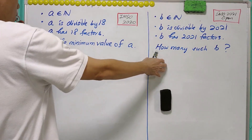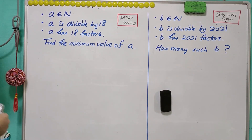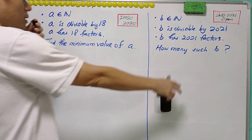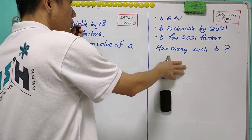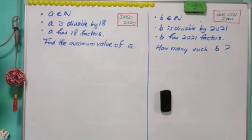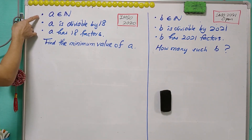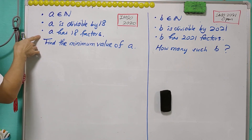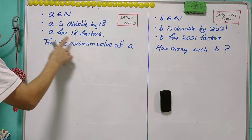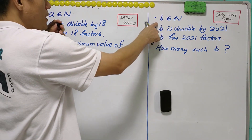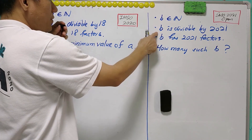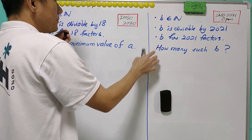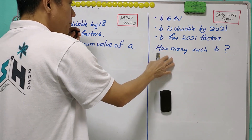These are the two questions to be discussed today. Quite similar — one appears in IMSO 2020, and the other appears in SMO 2021 open section. For the first question, A is a positive integer divisible by 18 and has 18 factors; we are asked to find the minimum value of A. For the other question, B is a positive integer divisible by 2021 and has 2021 factors — how many such B exist?